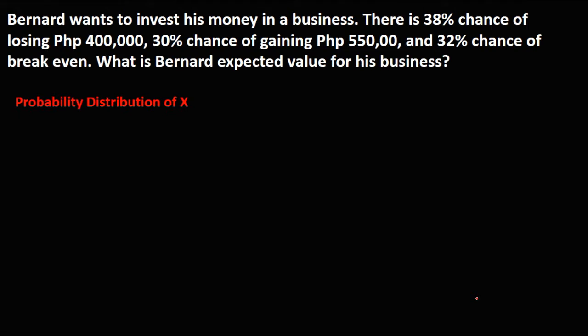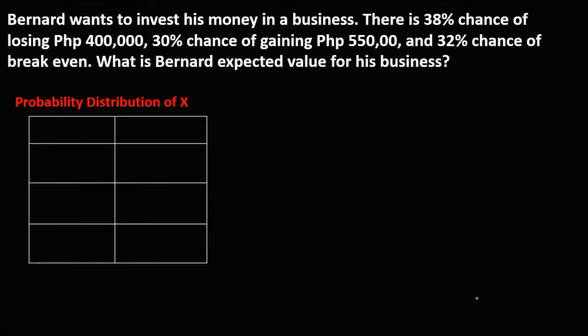First, we need to create a probability distribution of X, where X represents the expected value and P(X) represents the probability of the expected value.